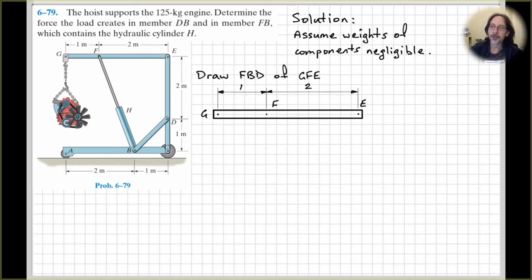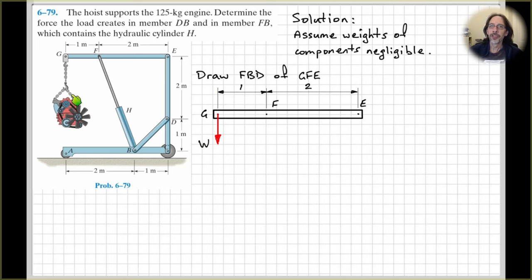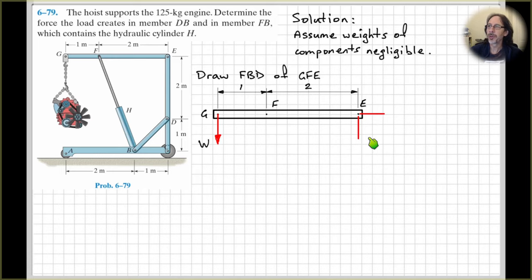Label all our important points. Make your diagram large, neat and clear. Make sure your witness lines for your dimensions go to the points that they're referencing. Start by putting on our load — the weight of the engine — supported by the chain, so the force in this chain must be equal to the weight of the engine, acting on the end of the beam. At E, where we're connected to the upright of the hoist, we have a pin connection, so where we remove that connecting member we replace it with two reaction forces.